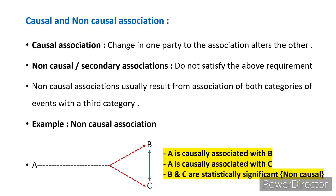Non-causal associations usually result from the association of both categories of events with a third category. For example, A is causally related to B and also causally related to C. But the association between B and C, shown by a green arrow, is statistically significant but not causal — meaning B is not causing C, and any change in B will not reflect in C and vice versa.